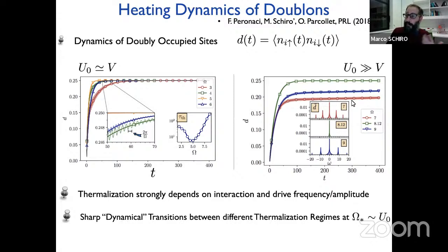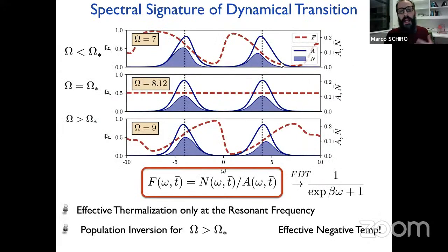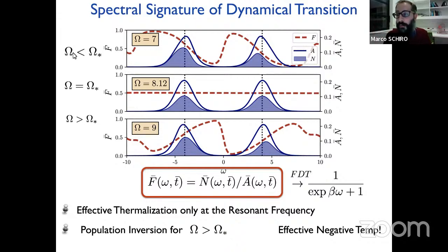As you tune the drive frequency omega, there is a sweet spot at which this pre-thermal plateau melts away and the dynamics goes rapidly to infinite temperature. This sharp dynamical transition between different thermalization regimes is tuned by the drive frequency. Let me give more insight by looking at the spectral signature of this transition.